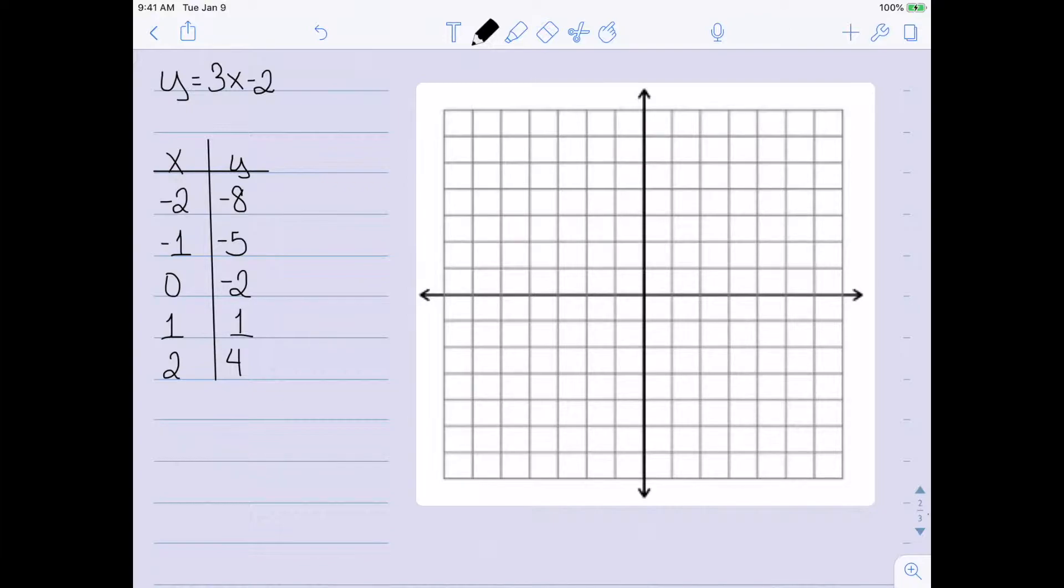And now we can start looking at just plotting these points. This graph only goes to plus and minus 7, so I'm going to skip the first point. The second one tells me to go left 1 and down 5. I then need to go over 0 and down 2. Over 1 and up 1.